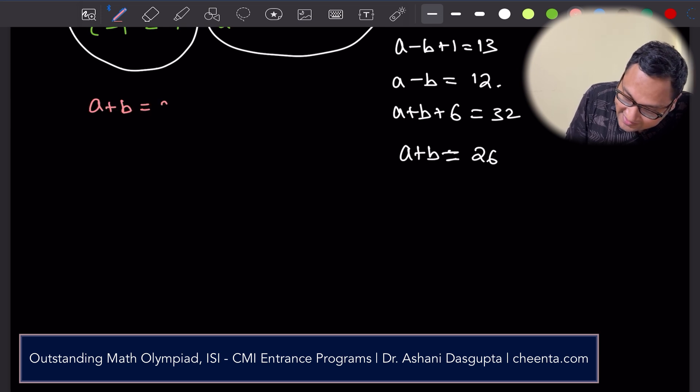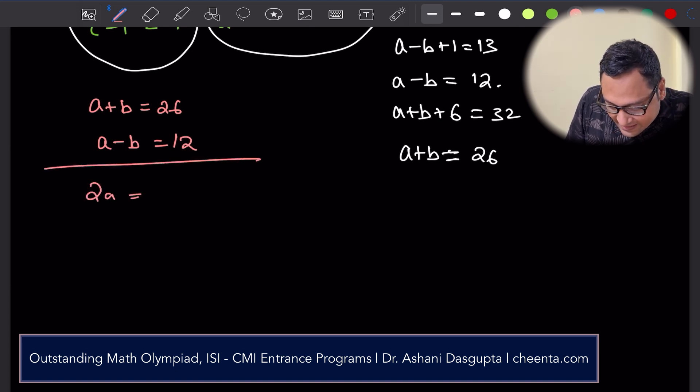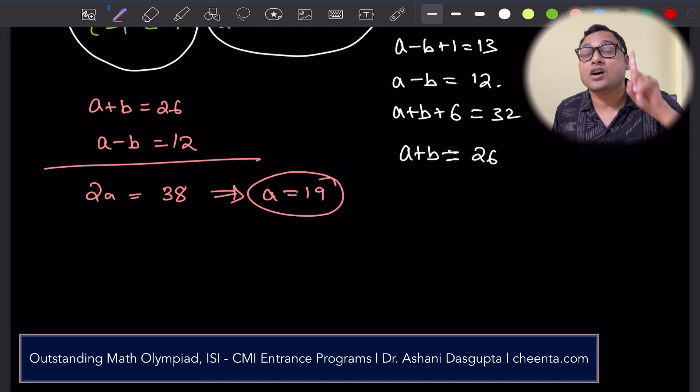So a + b is 26, a - b is 12, so 2a is 38, or a is 19. So we got one answer.